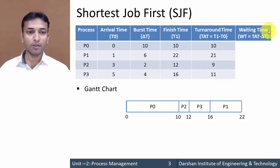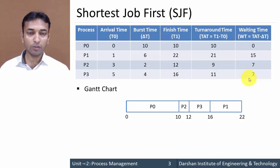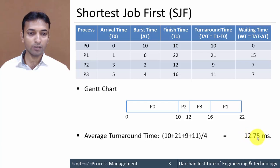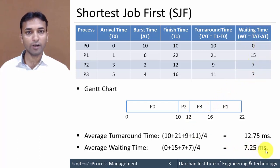Waiting time equals turnaround time minus burst time. For P0: 10 minus 10 equals 0. For P1: 21 minus 6 equals 15. For P2: 9 minus 2 equals 7. For P3: 11 minus 4 equals 7. The average turnaround time is the sum of all values divided by number of processes (4), which equals 12.75 milliseconds. The average waiting time is similarly 7.25 milliseconds.